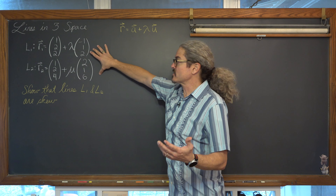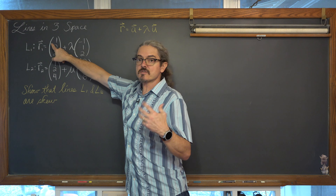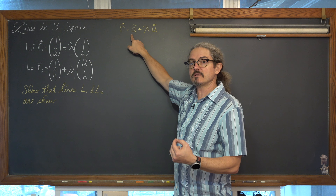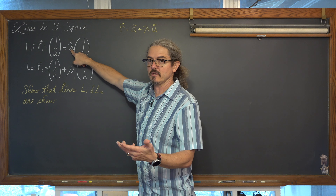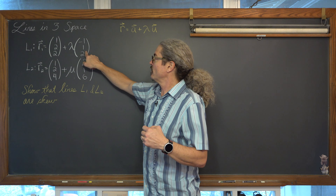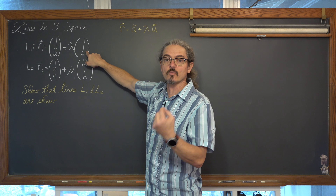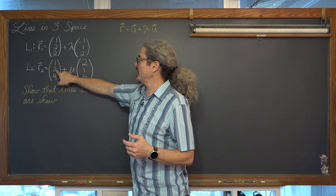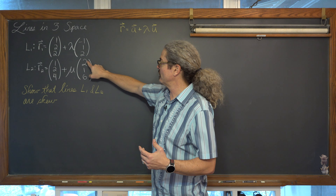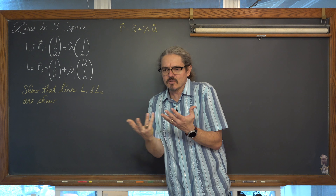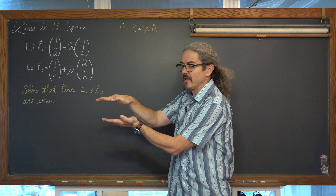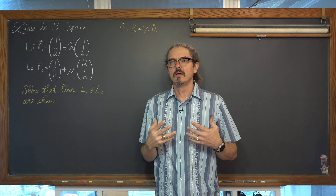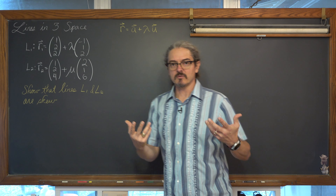When you're looking at the equation of these two lines in 3 space, you see the first vector in component form — 1, 2, 2 — the x, y, z coordinate of a point that line 1 contains. Then after the scalar multiple lambda, we have a direction vector of negative 1, 1, and 2. That's the direction vector — the gradient vector — of line 1. Line 2 contains the initial point 1, 2, 4 and has a direction vector of 2, 1, and 6. Parallel vectors are scalar multiples of each other, so we're going to do a parallel check.